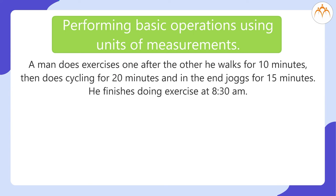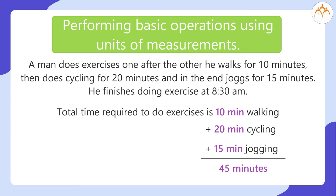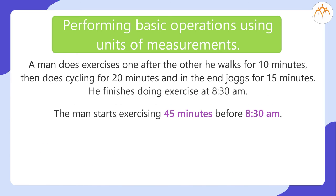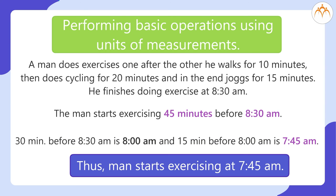Let's see another example. A man does exercises one after the other: he walks for 10 minutes, does cycling for 20 minutes, and jogs for 15 minutes, finishing at 8:30 a.m. Total exercise time = 10 + 20 + 15 = 45 minutes. He starts 45 minutes before 8:30 a.m. — 30 minutes before 8:30 is 8:00, and 15 minutes before 8:00 is 7:45 a.m. Thus the man starts exercising at 7:45 a.m.